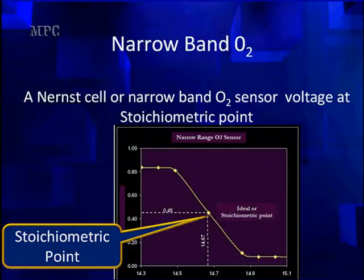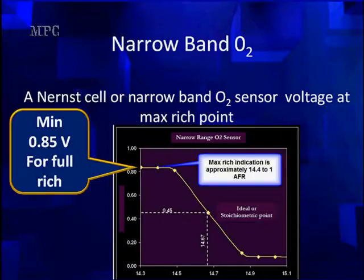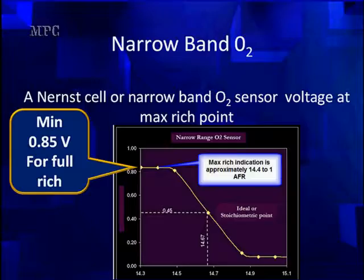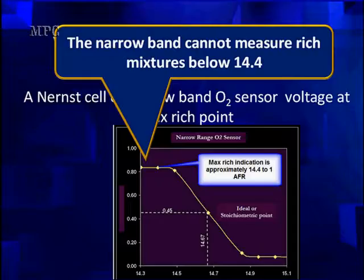This is for the narrowband oxygen sensor, also known as the NERC cell. We have a minimum voltage level. When mode 6 looks at this, the PCM is going to drive the mixture rich and look at the rich indication. It's going to take it out to about 14.4 to 1 air-fuel ratio — that's the max rich indication for these narrowband cells. If we go any richer, the line stays the same. So the voltage at this point is critical; it can be anywhere from 0.85 to 1.2 volts, but the minimum is 0.85. The PCM measures the voltage at this point to know where it is because it's a variable.